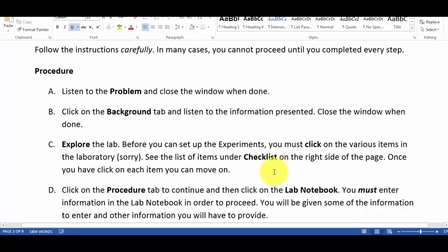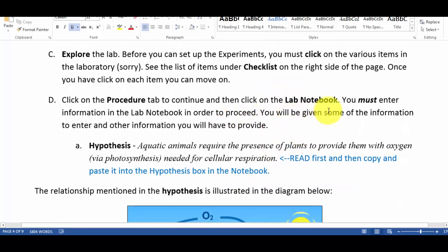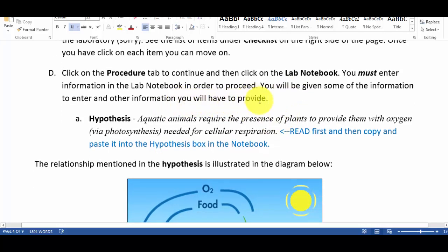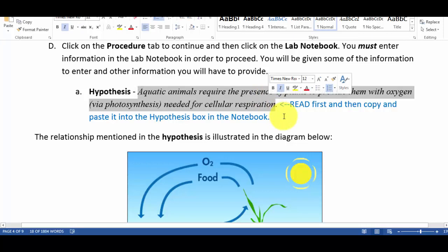Then you're going to click procedure, you're going to click on the lab notebook. You must enter information in the lab notebook in order to proceed. You'll be given some of the information to enter and other information you have to provide. So here's the hypothesis. You can just copy it like that, control-C, enter it into the box in the notebook.